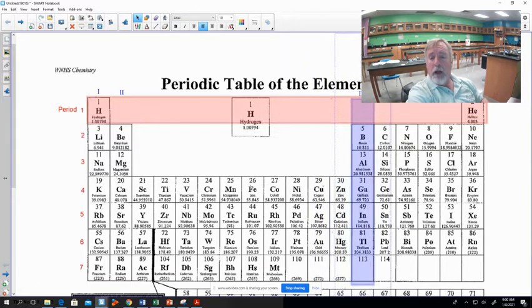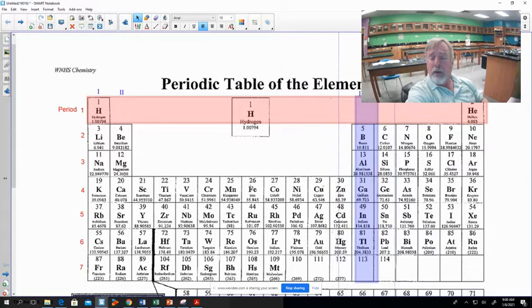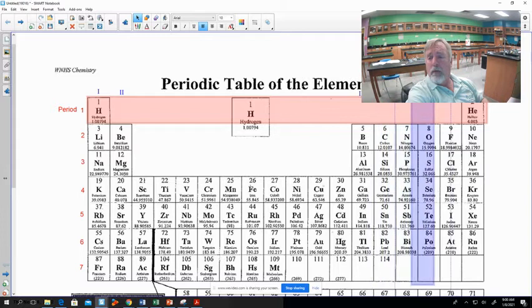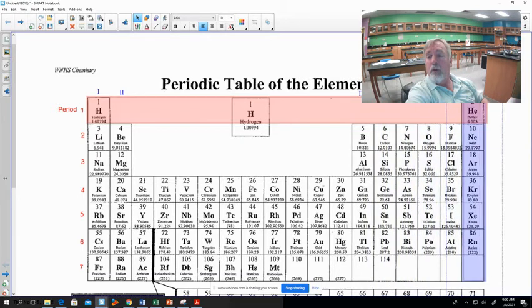Then we're going to come over here and this is now group III of your periodic table. Group IV, group V, group VI, group VII, group VIII. Notice we're using Roman numerals to designate our groups.